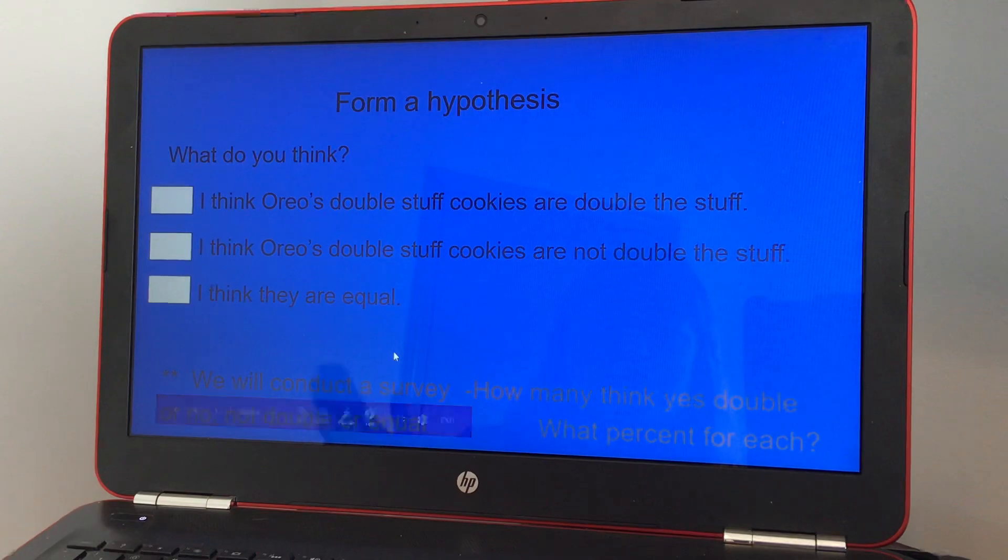And then we're going to form a hypothesis. What do you think is going to happen? I think Oreos double stuffed cookies are double the stuff. I think Oreos double stuffed cookies are not double the stuff. I think they are equal.